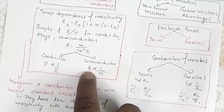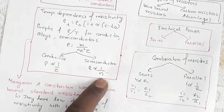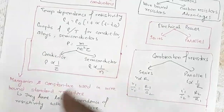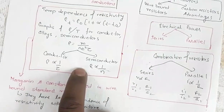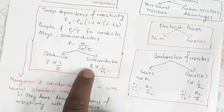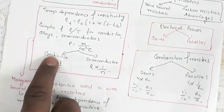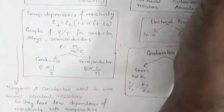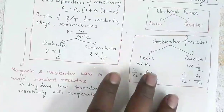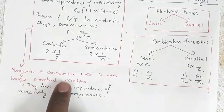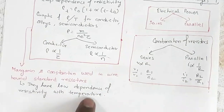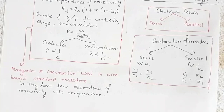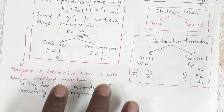For semiconductors, ρ is inversely proportional to n. Increasing temperature causes breakage of covalent bonds, increasing the number density of free electrons, which decreases resistivity. So for semiconductors, resistivity decreases on increasing temperature, while for conductors it increases. Manganin and constantan are used in wire-bound standard resistors because they have low dependence of resistivity on temperature — resistance doesn't fluctuate much.